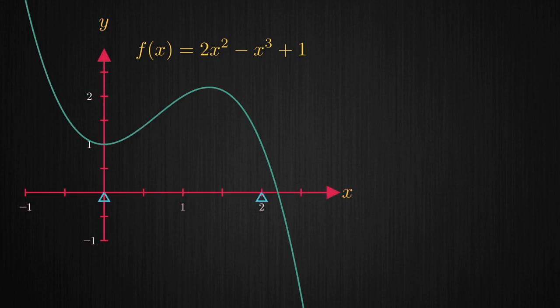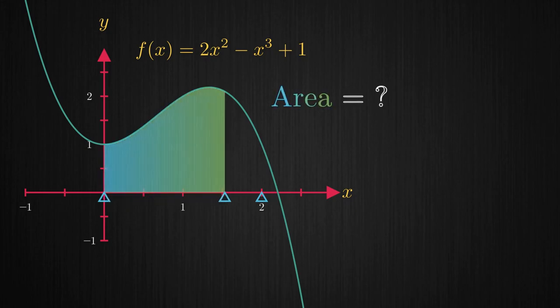Let's say we want to figure out the area underneath this curve starting from x equals 0 all the way up to x equals 2.